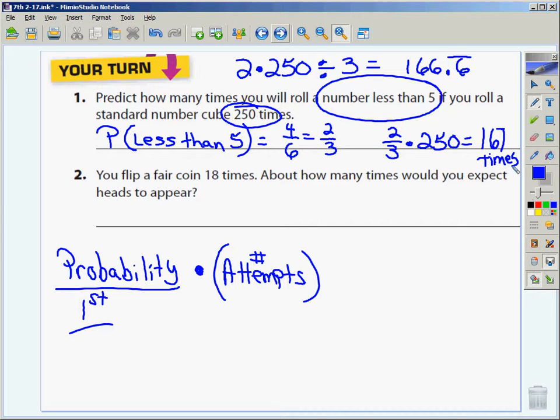Number two, you flip a fair coin. Why do you think it says a fair coin? Heads and not a two-headed coin or a two-tailed coin. It's a fair coin. It's got both a heads and a tails. And you're going to flip it eighteen times. This eighteen represents the number of times I'm going to attempt something. It says about how many times would you expect to get a head? So I'm going to do the probability of getting a head, which is one out of two. And I'll take one over two times eighteen. The probability times the number of attempts.